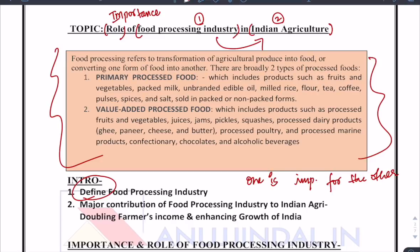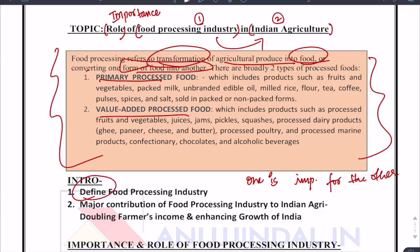Food processing industry is basically transformation. In layman terms, a packet of Lays or a packet of jam is part of the food processing industry. It means transformation of agricultural products into food, or converting one form of food into another — for example, tomatoes into ketchup. There are broadly two types: primary processed foods, which do not change their form, such as packed fruits or packed milk, and value-added processed foods, such as jam or ketchup.